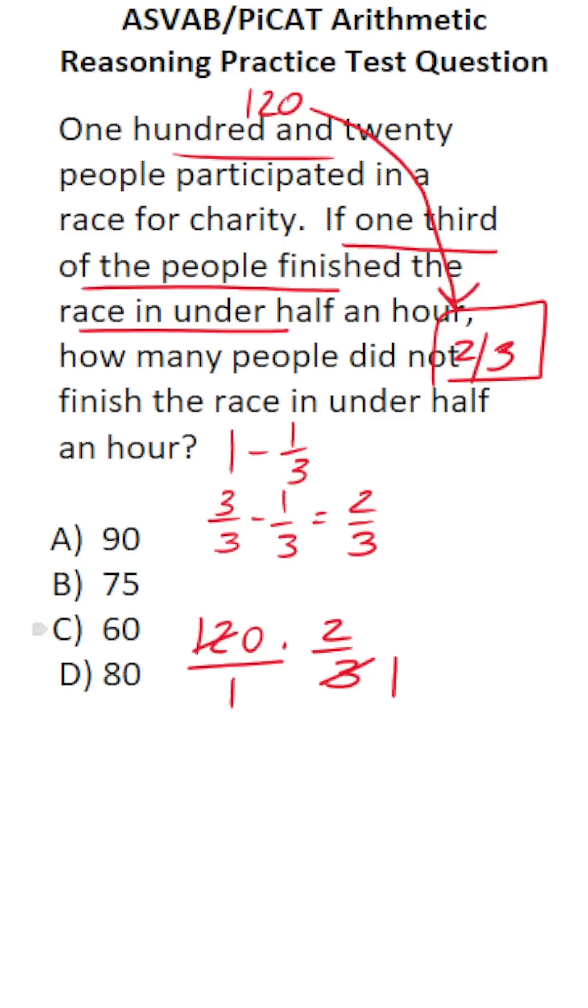Three goes into three one time. Three goes into 12 four times. So three goes into 120 forty times. 40 divided by one is 40. Two divided by one is two. Forty times two is 80.